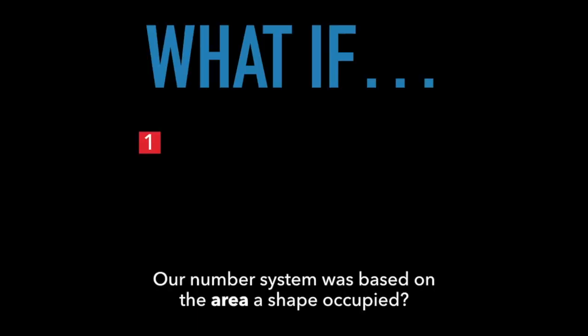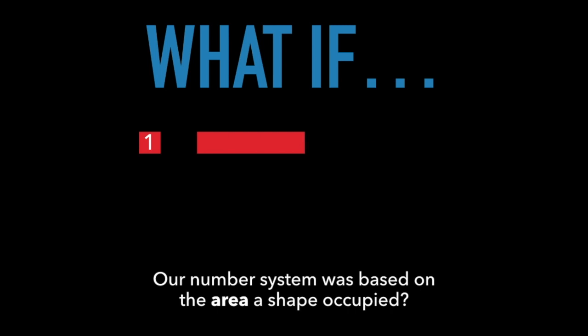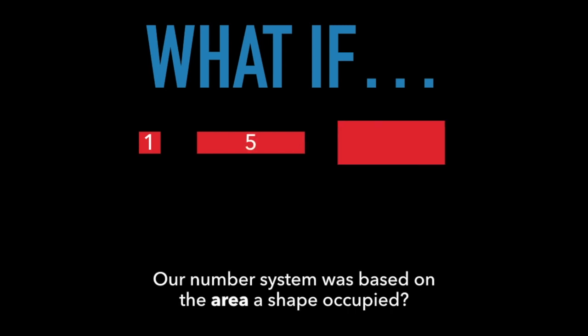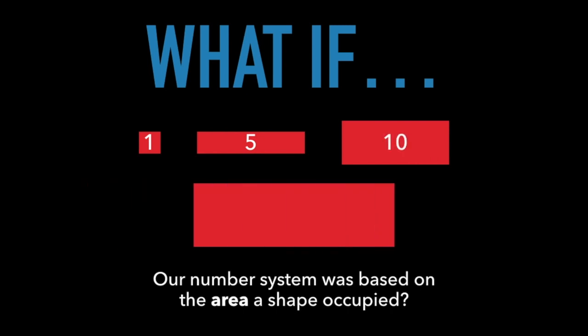What if our number system was based on the area that a shape occupied? This would be 1, and this? 5. And this one? 10. What about this one? 27 and 2 tenths? Hmm. This system could be a problem.